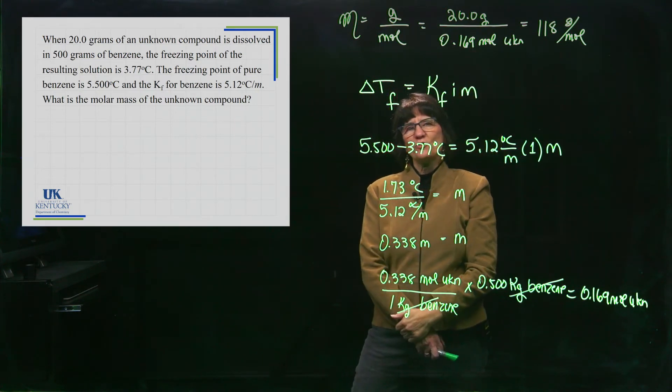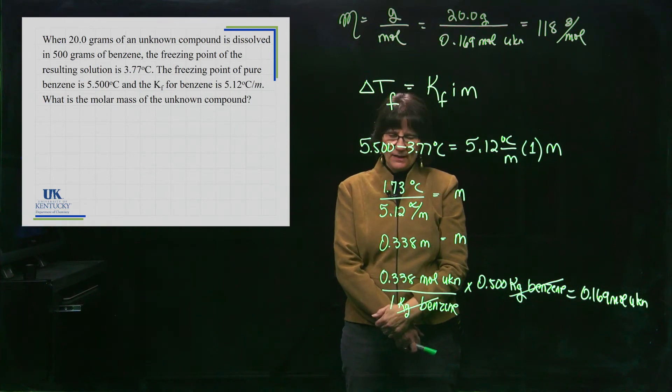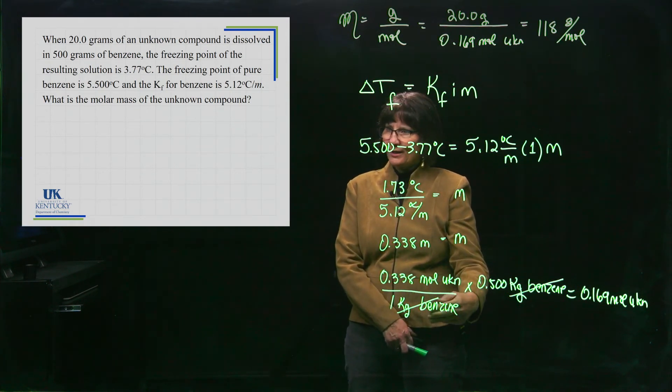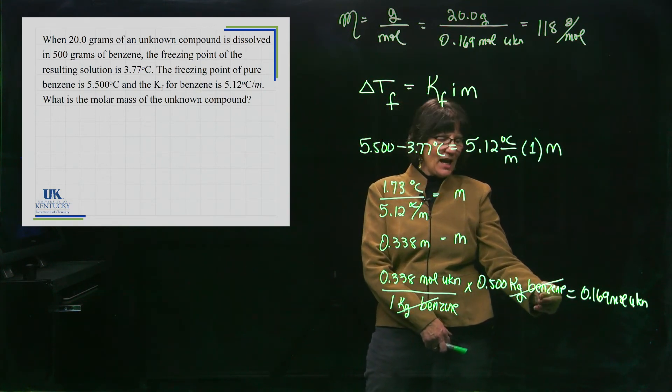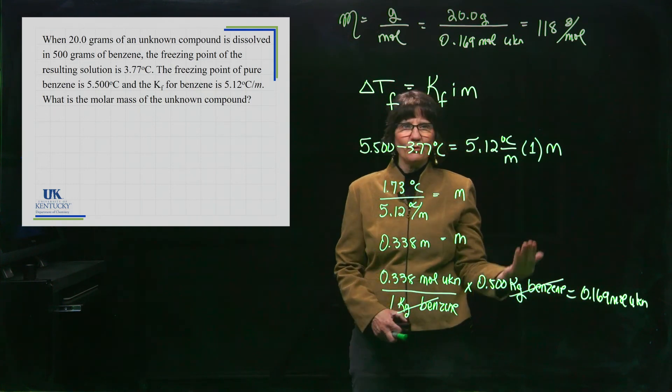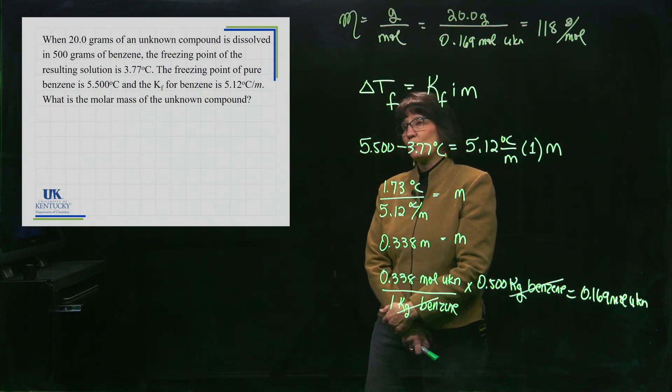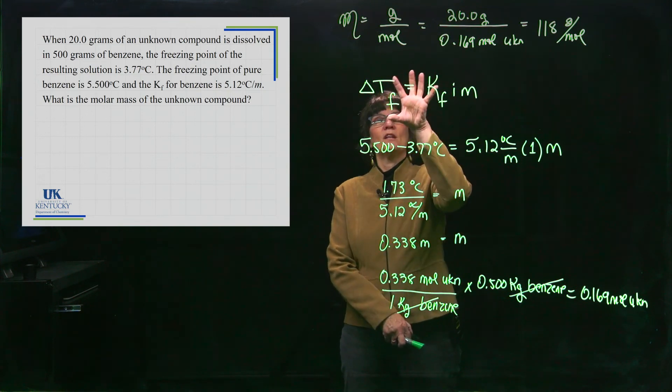What if it was osmotic pressure instead? In osmotic pressure, it has molarity that comes out. Molarity is moles per liter of solution. So if you multiply by how many liters of solution you have, you would again get the moles of your unknown. So it's a very similar process if it was osmotic pressure instead of freezing point depression.